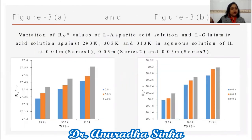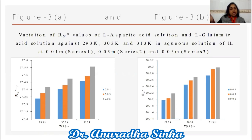The refractive index and molar refraction increase with increasing concentration of the amino acid in high-density solutions. L-glutamic acid has higher values than L-aspartic acid, showing that its molecules are more tightly packed. Figures 3a and 3b show the variation of R_m⁰ values for L-aspartic acid and L-glutamic acid in ionic liquid solutions at three temperatures. The gradual increase in R_m⁰ values with rising mass fraction of co-solvent and temperature signifies that solute-solvent interactions predominate over solute-solute interactions.